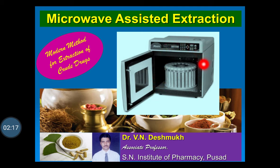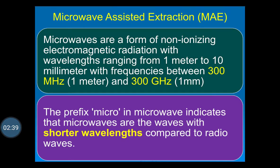This is a typical example of the microwave-assisted extractor in which samples of the crude drugs are placed. Through the display, one can adjust the temperature and time required for the extraction of phytoconstituents present in the crude drugs. Microwaves are a form of non-ionized electromagnetic radiation with wavelength ranging from 1 meter to 10 millimeters, with frequencies between 300 megahertz and 300 gigahertz.